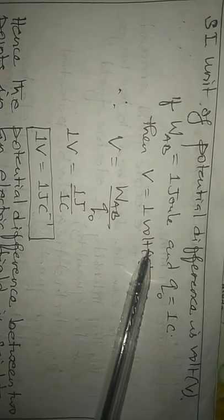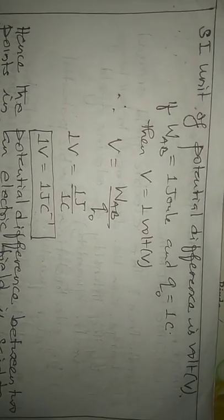The unit of potential difference is expressed in Volts. Suppose the work done to move the charge from A to B is one Joule, and the test charge is one Coulomb. If you move a test charge of one Coulomb from A to B by doing one Joule of work, then the potential difference between the two points is one Volt. Potential difference is said to be one Volt when a work of one Joule is done in moving a test charge of one Coulomb from one point to another point in an electric field.